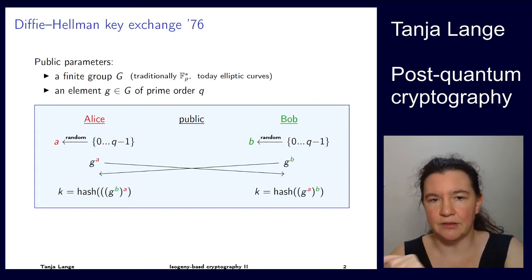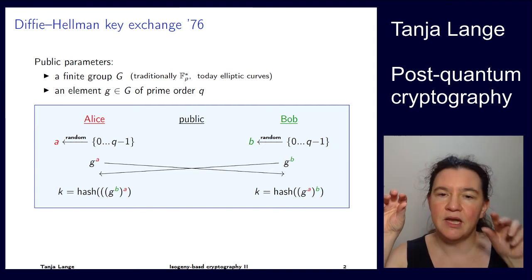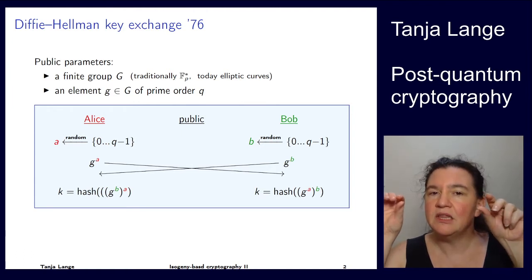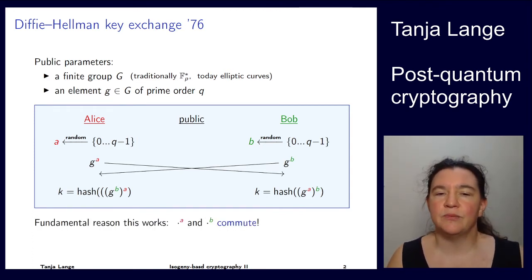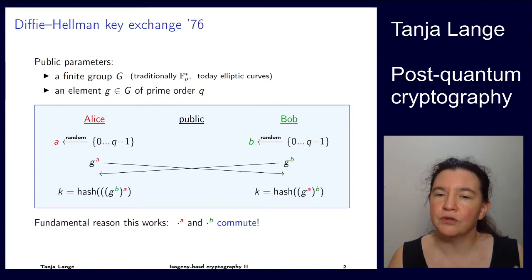So Alice sends it to Bob, Bob sends it to Alice. And then both of them can use their private exponents, these lowercase letters, to compute, on Alice's end, she takes G to the B which she got from Bob, computes that to the power A. And on this side, Bob has G to the A from Alice, and he knows his secret B, so he computes G to the AB. But these are integers, A times B is the same as B times A. And so when both parties then take this number, for the usage in symmetric cryptography, they will compute the hash to get a key to use that. And the reason that this works is that the exponentiation with A and exponentiation with B commute.